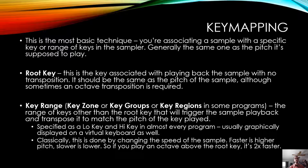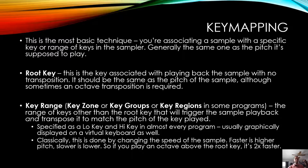Classically, the transposition is done by changing the speed of the sample. Faster results in higher pitch, slower results in lower pitch. So if you play an octave above the root key, it's playing twice as fast. This is especially why you want to crop out all silence, especially at the beginning, so that there's no delay that gets longer and longer the lower in pitch you transpose it.